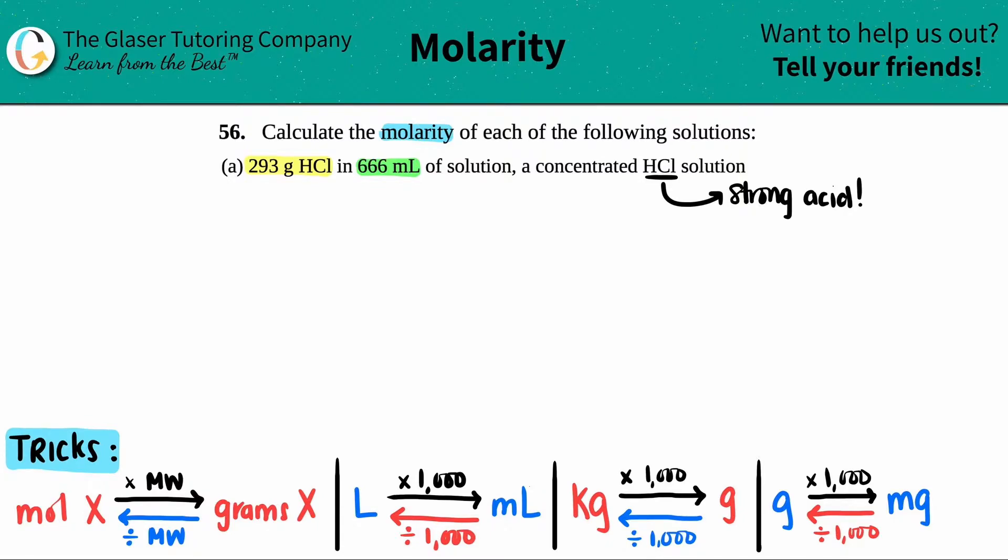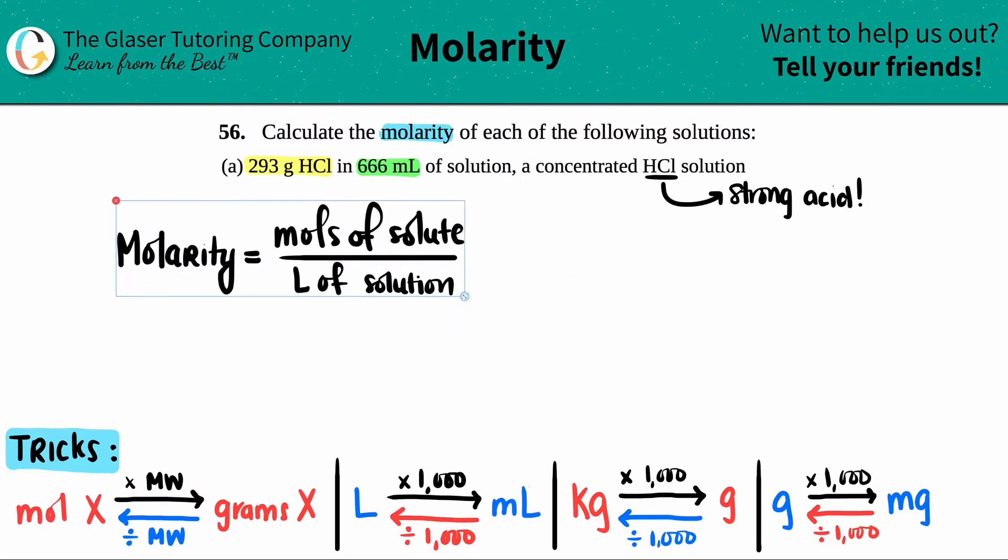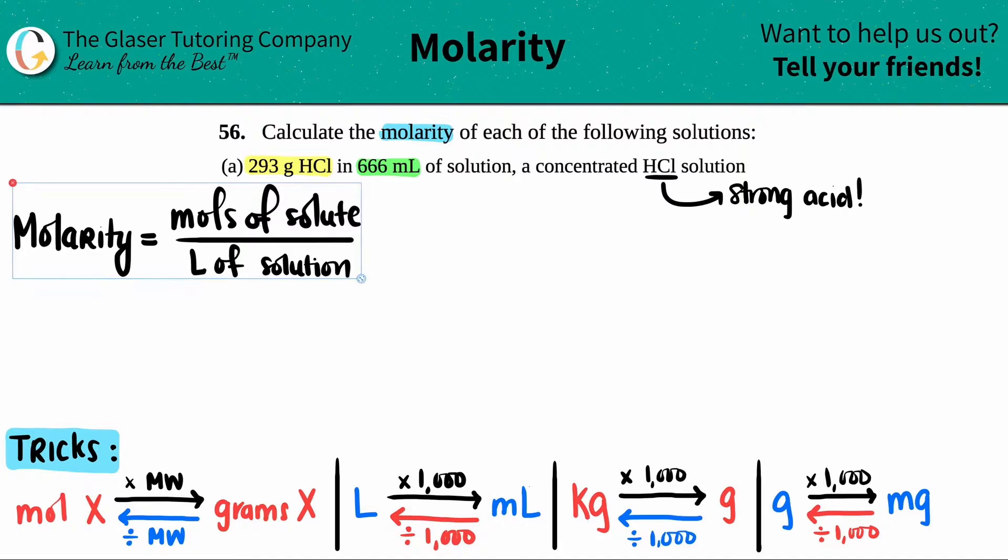We got to find the molarity. What's the formula for molarity? It's this guy right here, and I'll put this all the way in the upper left-hand corner. Molarity equals the moles of a solute divided by the liters of solution. More simply, capital M for molarity always equals moles divided by liters.